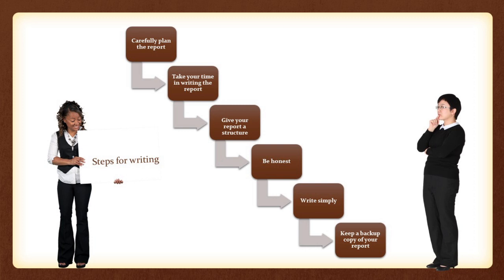Give your report a formal structure. If the organization already has a pre-prepared format for a report, follow that particular format. If there is no fixed report structure, then you can generate a structure of your own so that all the information is easily available and visible in the report. Be honest — do not create fake information, like the number of attendees for a conference or whether you attended all the sessions or not. Be honest about all the information that you are inserting into the report.